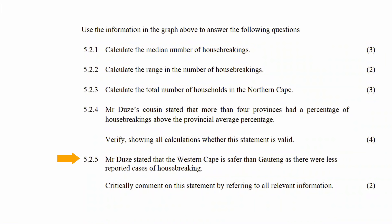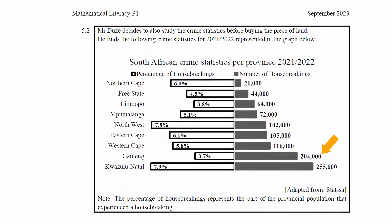In question 5.2.5, Mr. Doozie's Cousin stated that the Western Cape is safer than Gauteng as there were fewer reported cases of house break-ins. You have to critically comment on this statement by referring to all relevant information. Analyzing the data, we see that there are 204,000 house break-ins in Gauteng versus 160,000 in the Western Cape. Yes, there are more house break-ins in Gauteng compared to the Western Cape, but there is a higher probability of a house break-in in the Western Cape compared to Gauteng, as seen by comparing the percentage of house break-ins.